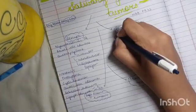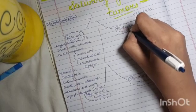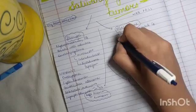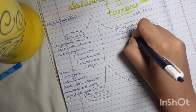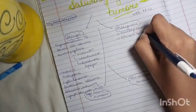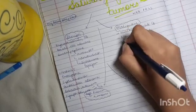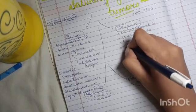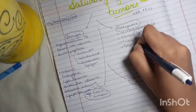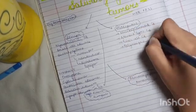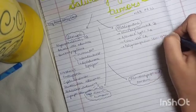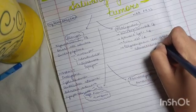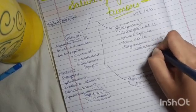By 'M,' you can remember mucoepidermoid carcinoma. By 'A,' adenoid cystic carcinoma. By 'A,' acinic cell carcinoma. By 'P,' you can remember polymorphous low-grade adenocarcinoma, that is PLGA.